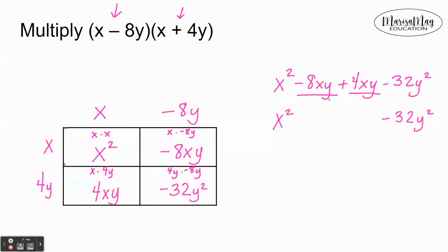But we're going to combine negative 8xy and 4xy together by adding the numbers in front to get negative 4xy. This is my final answer: I have multiplied and collected like terms to get x² minus 4xy minus 32y².